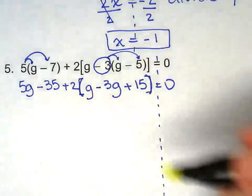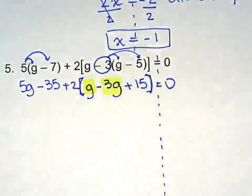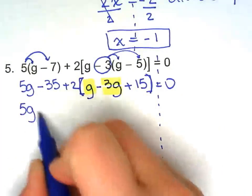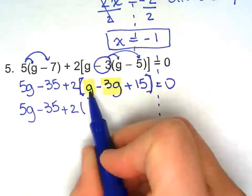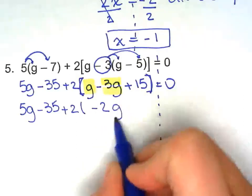So I'm going to combine what's in parenthesis right here. Just to save me some time right there. Before I distribute 2. So bring everything else down. 1 take away 3 is negative 2g.